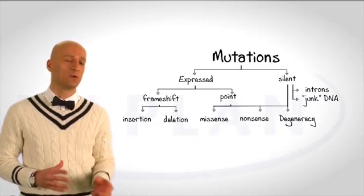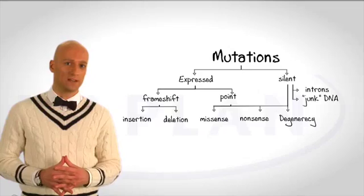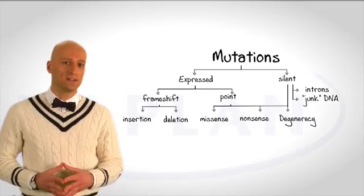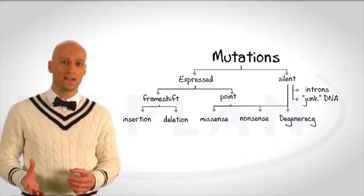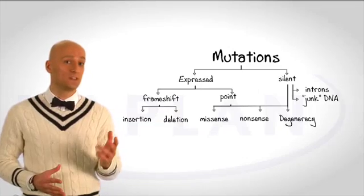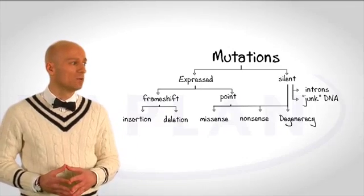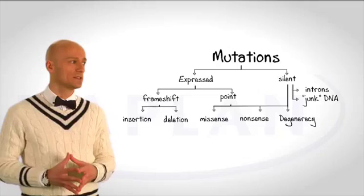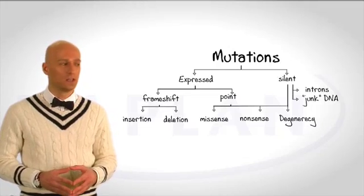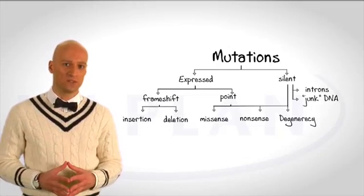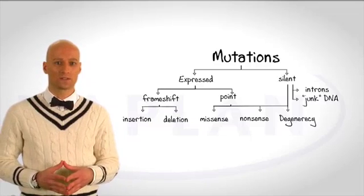This is known as the degeneracy or redundancy of the genetic system. Expressed mutations are changes in the genetic code that result in changes in the amino acid sequence. We have two general classes of expressed mutations. First we have the frameshift mutations, and second we have the point mutations.